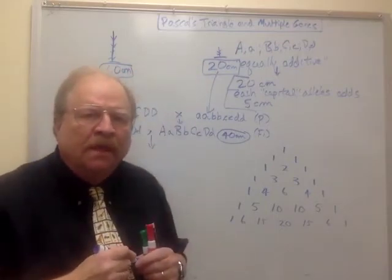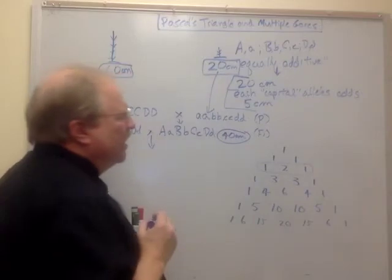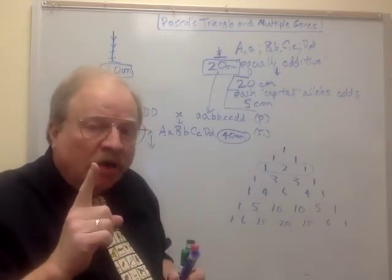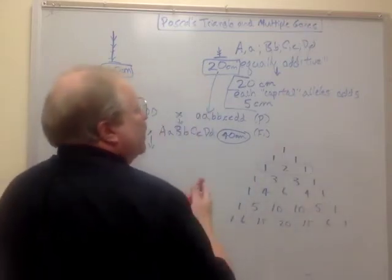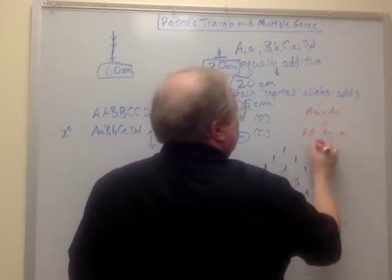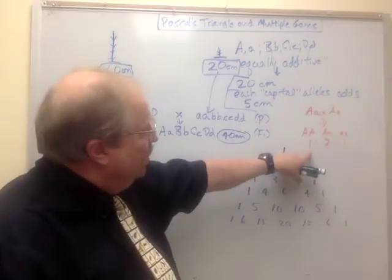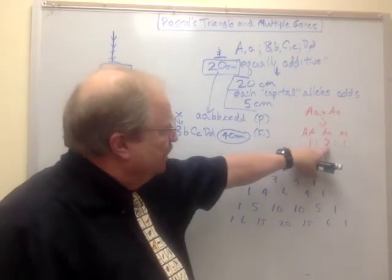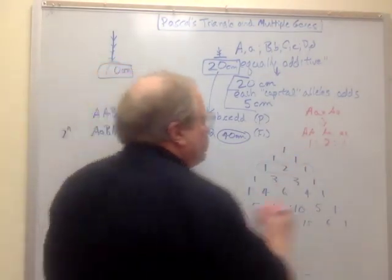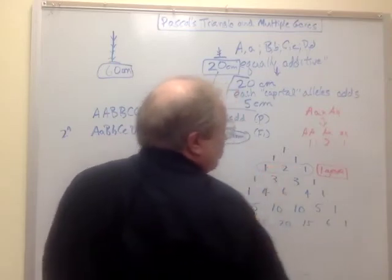Now take a look at Pascal's Triangle — there should be something vaguely familiar. Look at 1-2-1. Does that sound familiar? 1-2-1 is the genotypic ratio you see with a one-gene monohybrid cross. In the F2 generation from big A little a crossed with big A little a, you get big A big A, big A little a, and little a little a in a 1-to-2-to-1 ratio. If we're dealing with a gene where each capital allele adds height, this is also the phenotypic ratio — tallest, middle, and shortest. This row tells us the heights and numbers we'd expect for a one-gene cross.